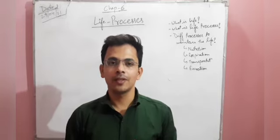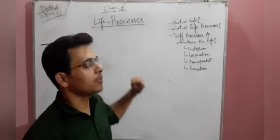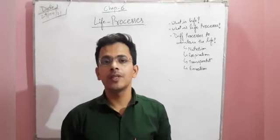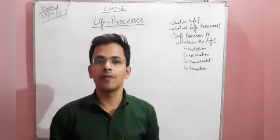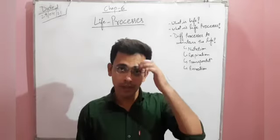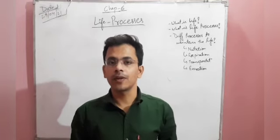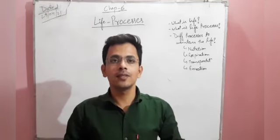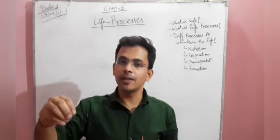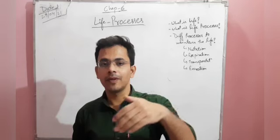The very first chapter in your biology section is Chapter 6, called Life Processes. In this chapter, we will explore the different aspects of what life is, how life processes work, and how life continues — as well as when we can say that life has ended.